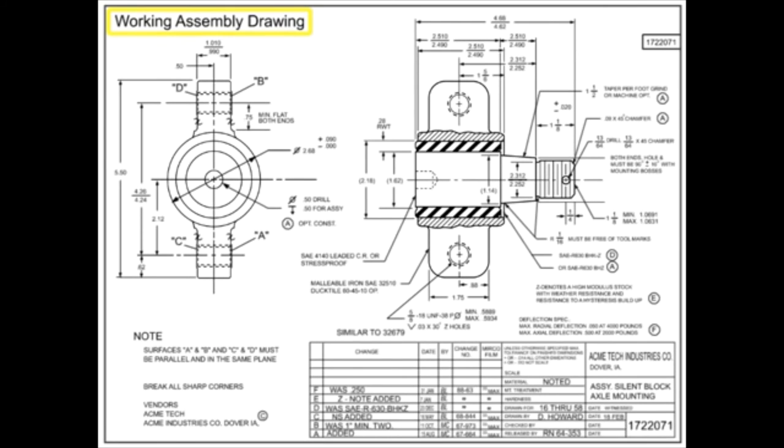Working assembly drawings combine detail drawings and assembly drawings. These drawings contain enough information to both create the subcomponents and assemble the finished product.